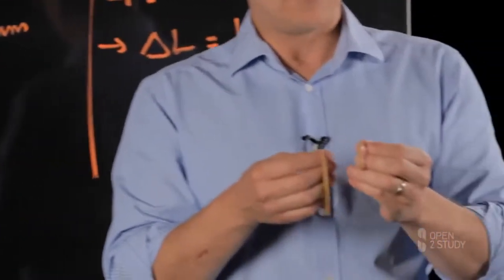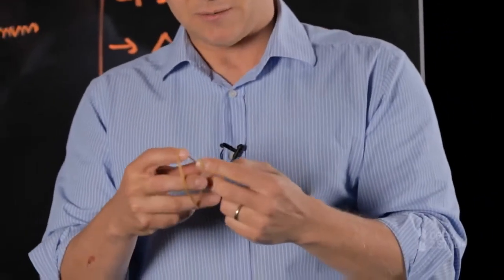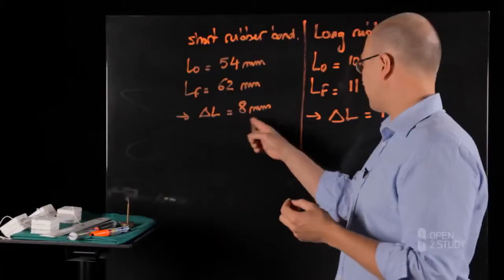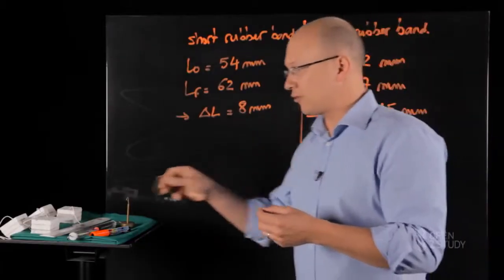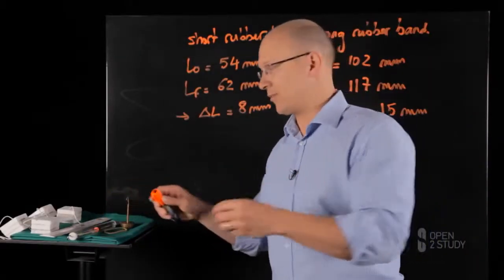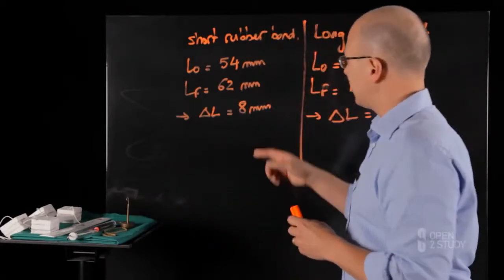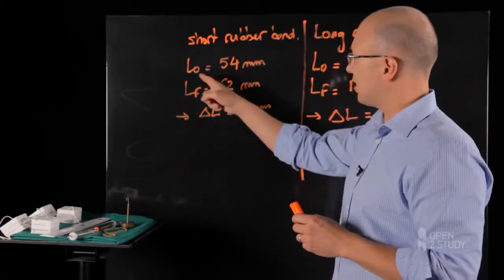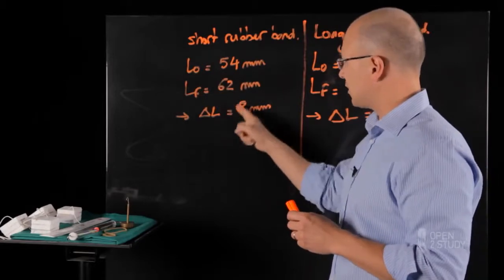The material has the same width, the same thickness. But we have different initial lengths and we have different elongations. So we can't use elongation to characterize the material's behavior. However, let's see what proportion of the initial length, L0, this delta L represents.